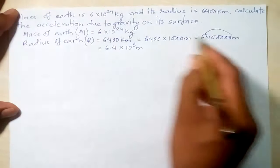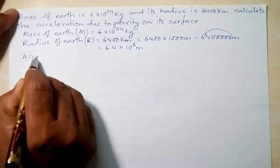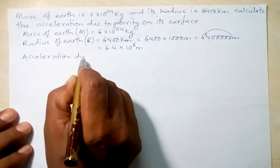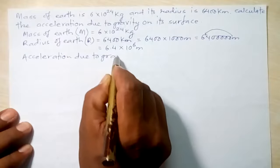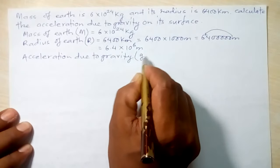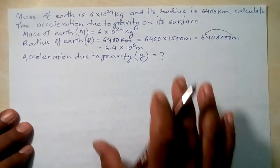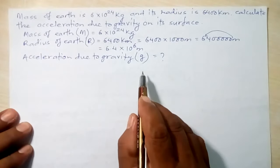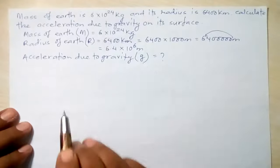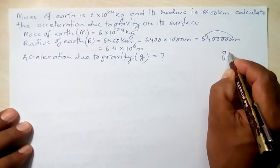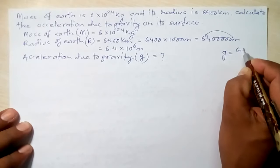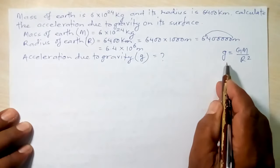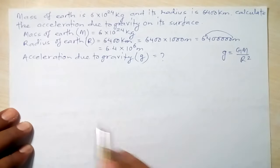The question asks for acceleration due to gravity, symbol small g. Whenever we have a numerical problem, we start with the relevant equation. The equation is: small g equals capital G times capital M divided by R squared.